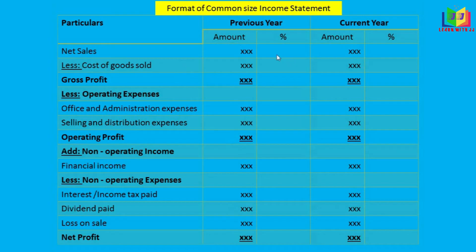We write the amount of all those items and find the percentage of each. The percentage is calculated on the basis of sales — sales is taken as the base. We do this for the current year as well, and we can also use this common size income statement to compare between different firms.